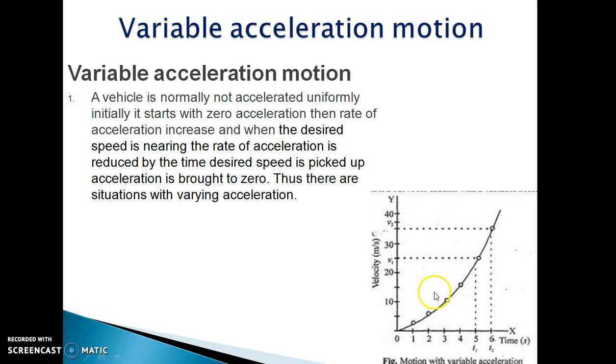This graph shows velocity versus time. From the graph it is clear that velocity of particle goes on changing with respect to time. It is an example of variable acceleration.